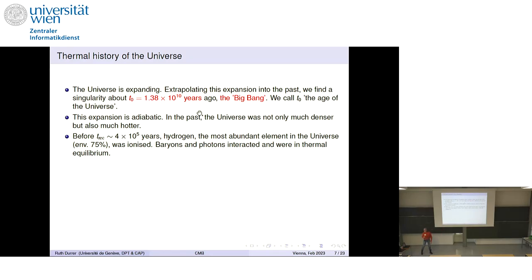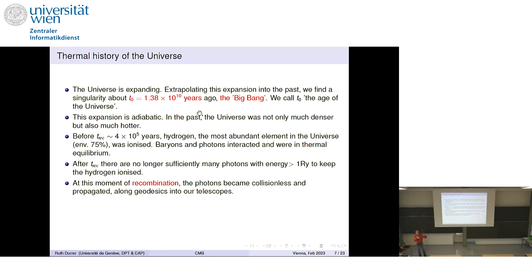The expansion is adiabatic. So in the past, the universe was not only much denser, it was also much hotter. And at the time T recombination, so when the universe was about 10 to the 5 years old, so you see a very small fraction of its present age, hydrogen, the most abundant element in the universe, was ionized. And baryons and photons interacted and were in thermal equilibrium. And the reason it was ionized was that there were just too many photons which had energies above 13.6 electron volts to let it recombine.